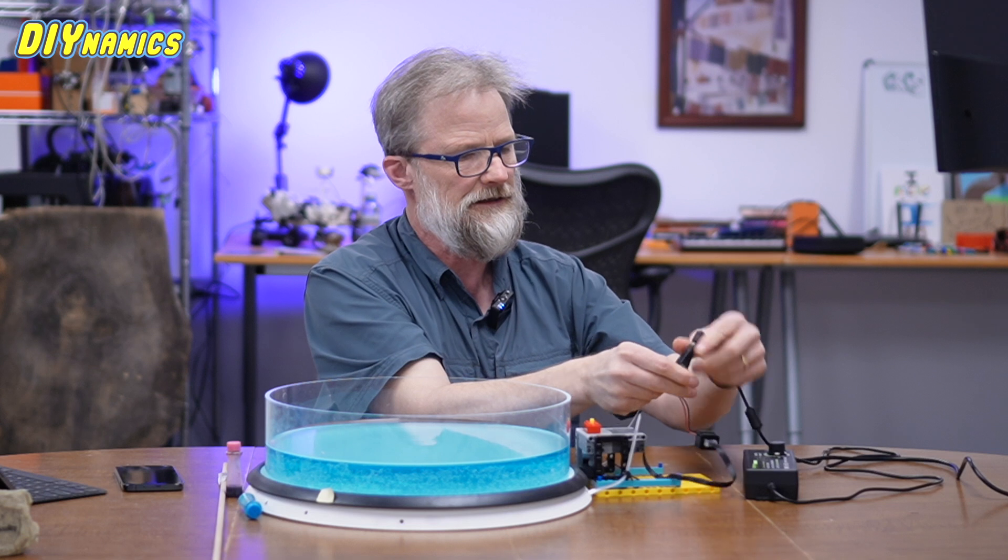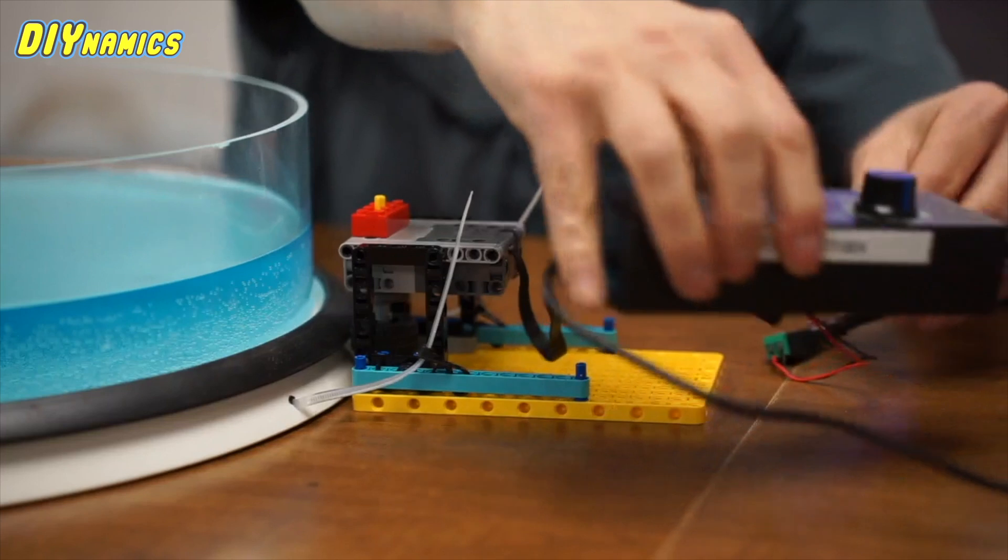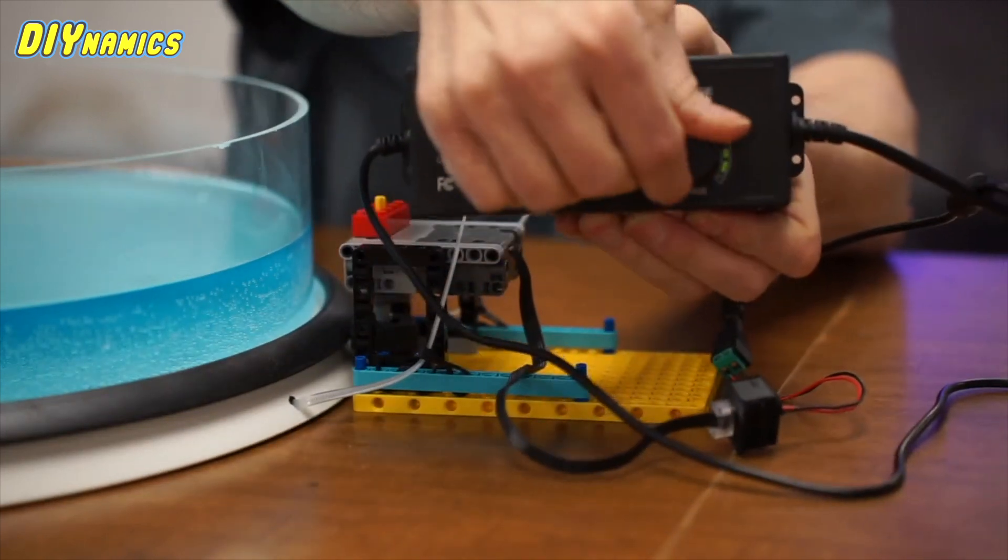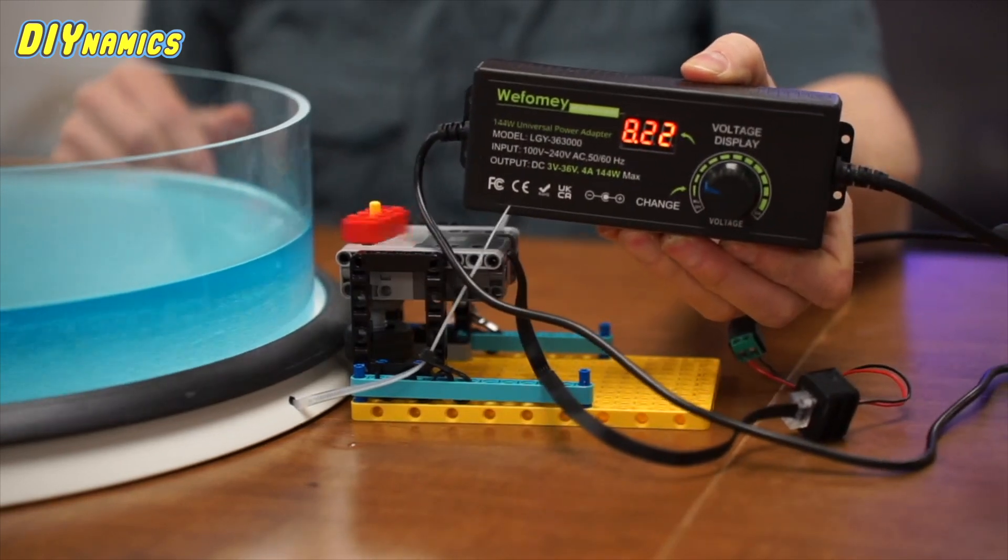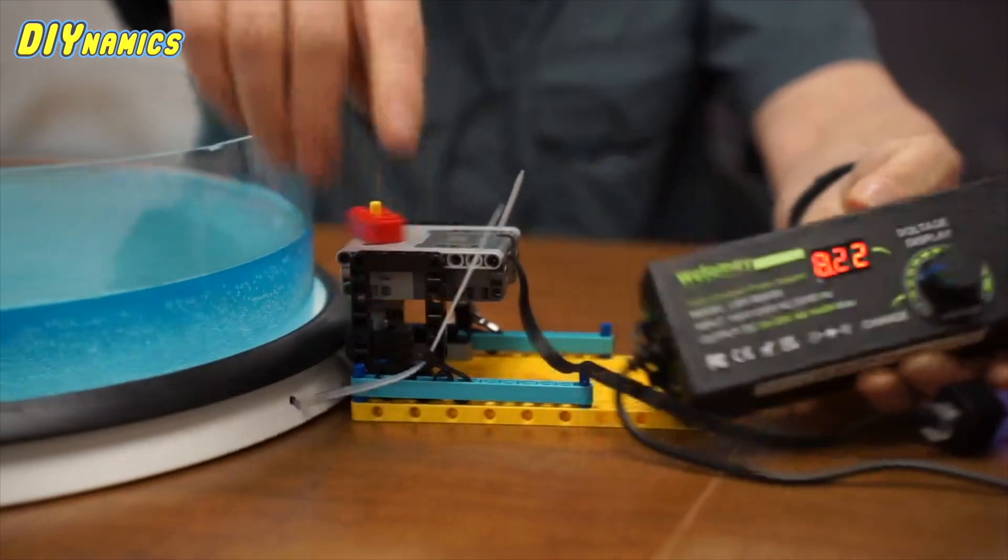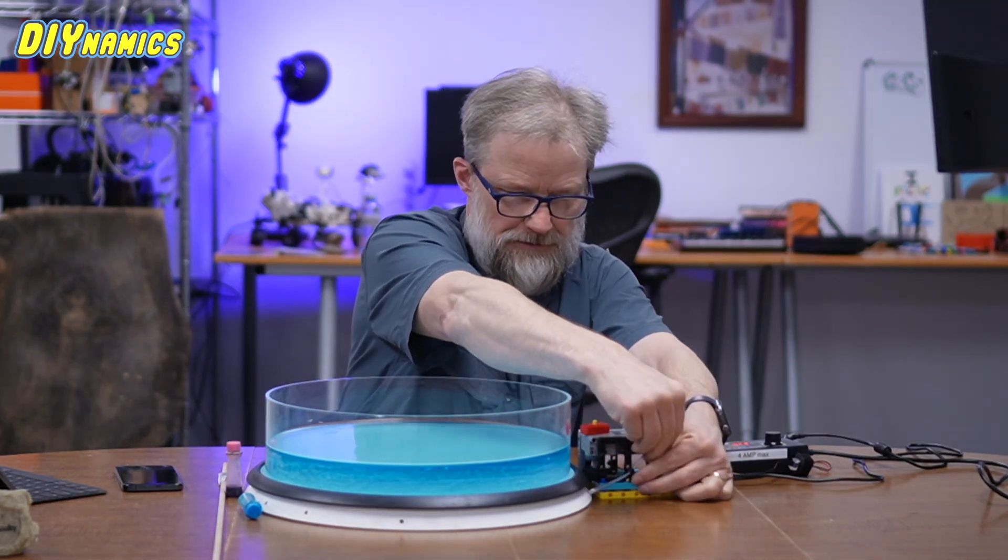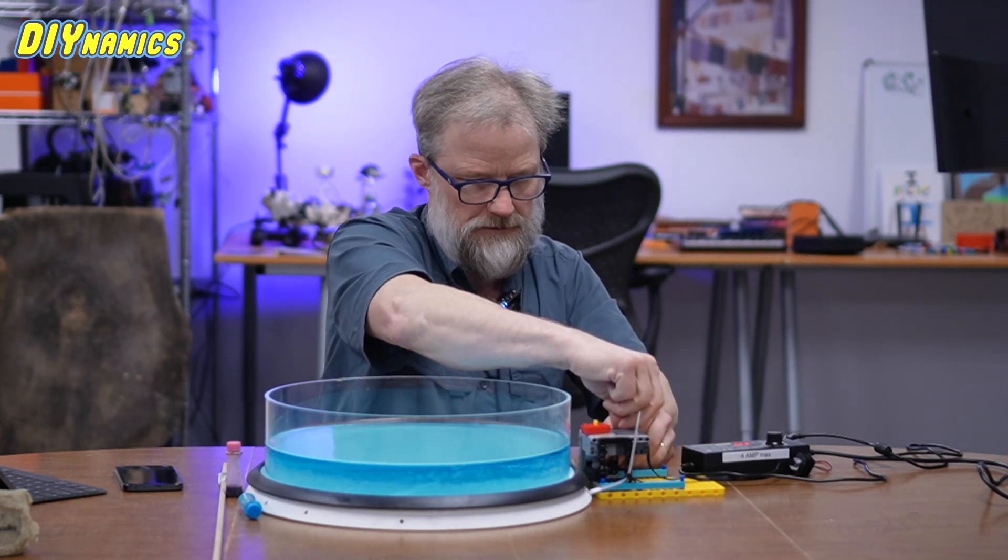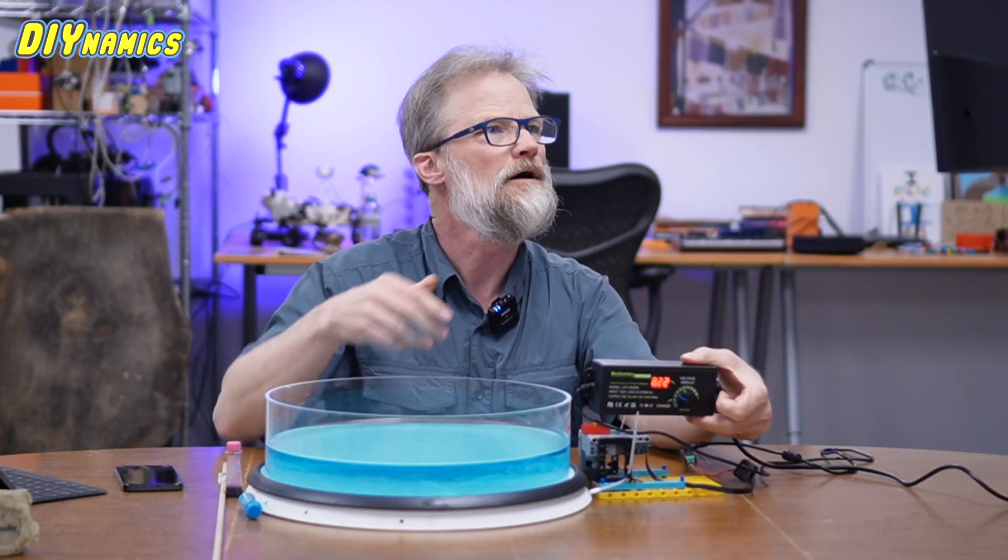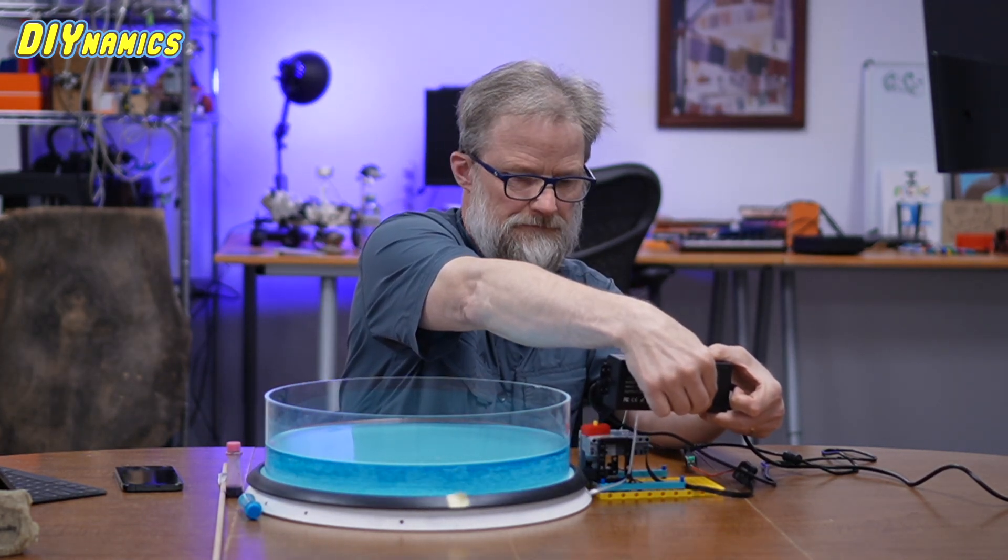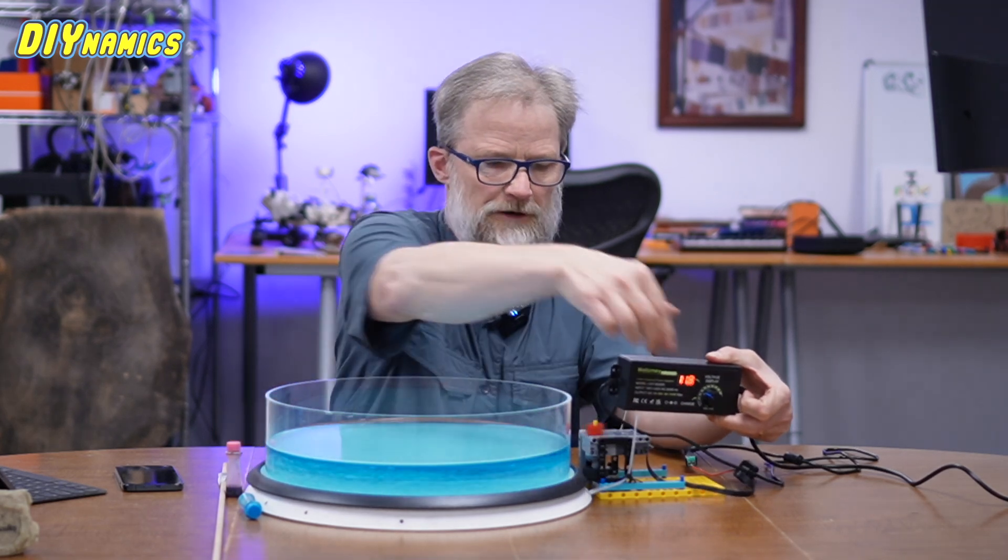Now I'm running the motor with the power supply at about eight volts. And then if I want to turn that faster, I can increase the voltage. If I want to slow it right down, I can decrease it.